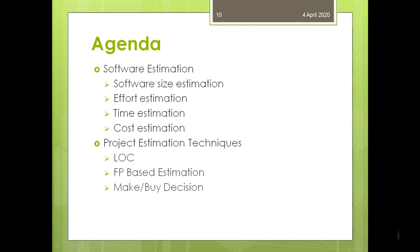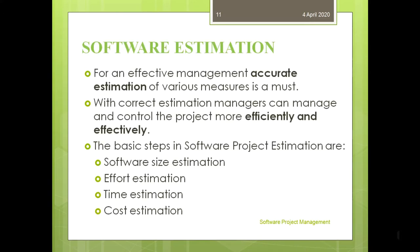First, I am going to tell you what is software estimation, and then we are going to discuss about the different steps in software estimation. There are four different steps: software size estimation, effort estimation, time estimation, and cost estimation. After that, we are going to discuss project estimation techniques — namely LOC, FP-based estimation, and make-or-buy decision.